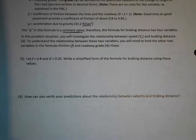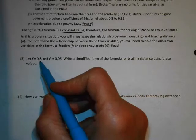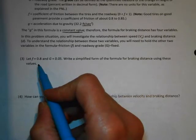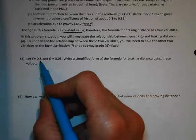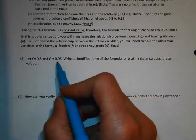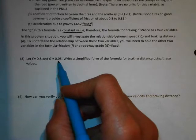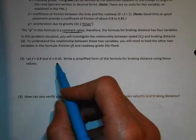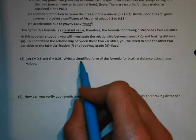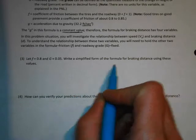Number 3 gives us: little f (friction) is 0.8, which is pretty decent tires and road conditions. G is 0.05, so that's a 5% grade going uphill. It says to write a simplified formula for the braking distance. Let's get the formula written down.